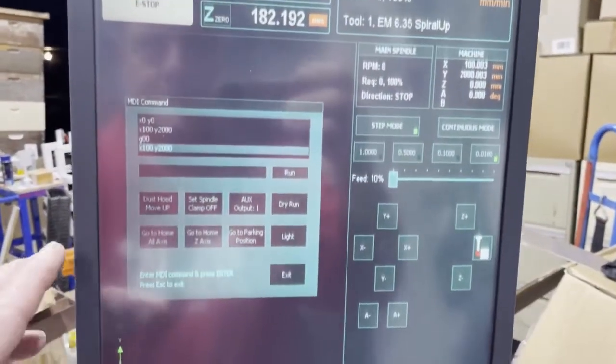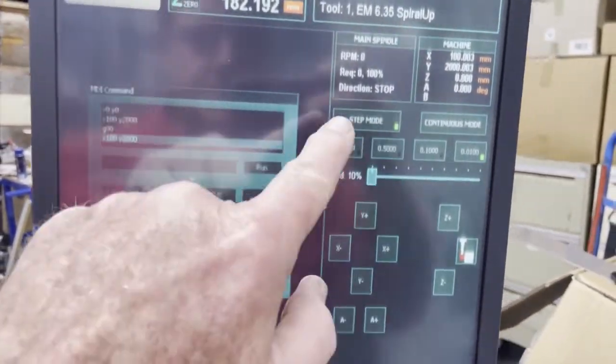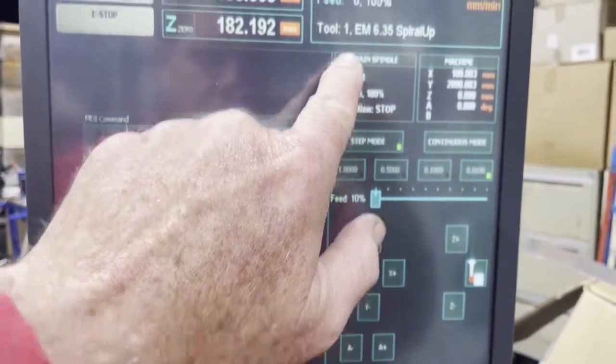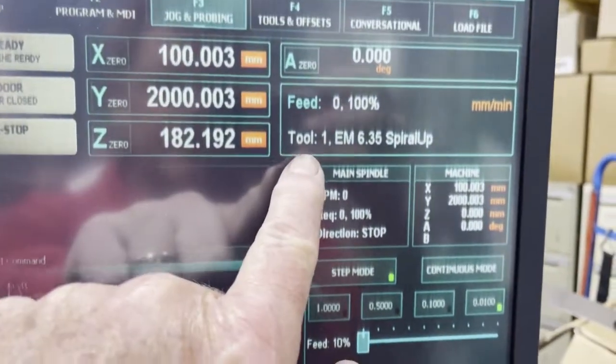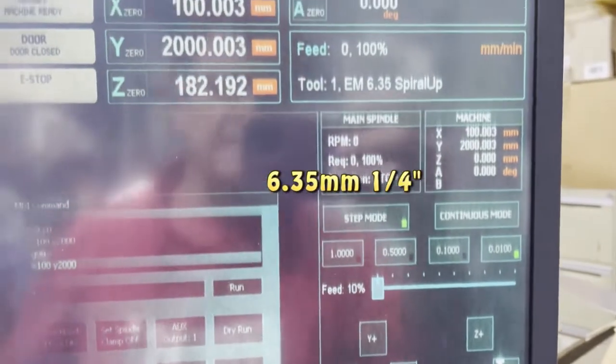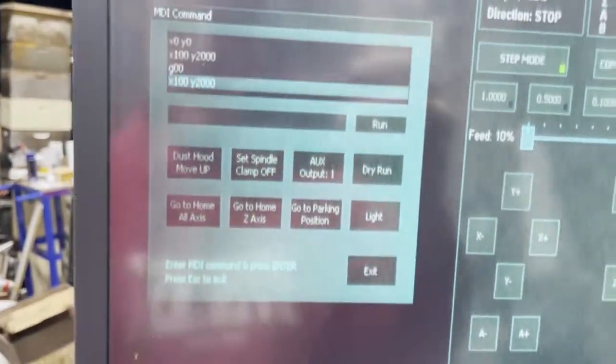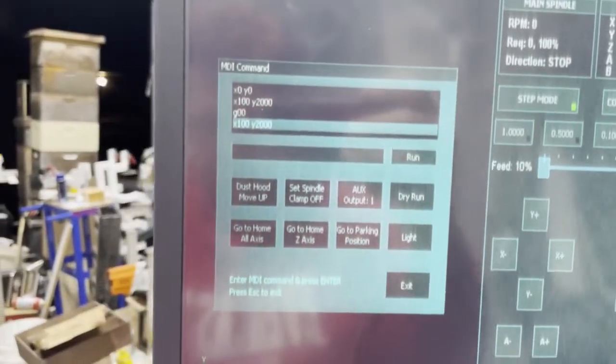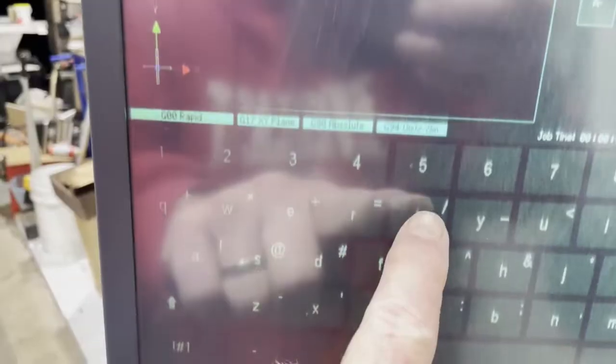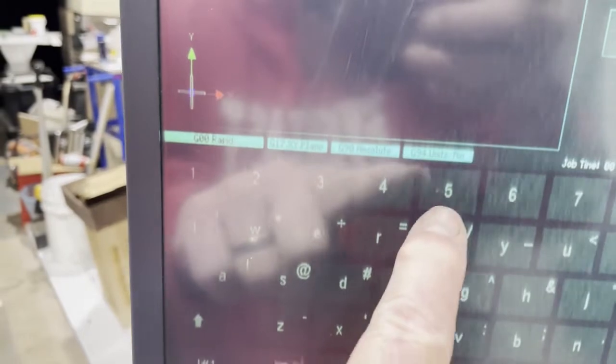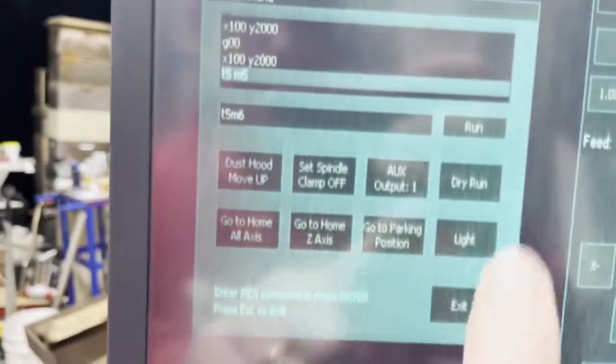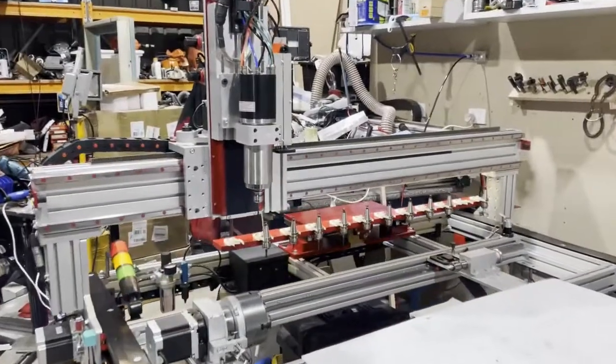So this is a Masso screen and to do a tool change it's telling us now that we've got tool one fitted, it's an end mill 6.35 spiral up. So I'm going to enter in here to do a tool change, so we need T5 M6, definitely got the right one now. Hit run and the piston goes up and away she goes.